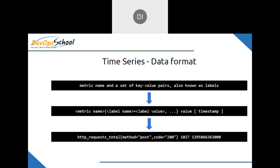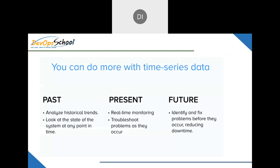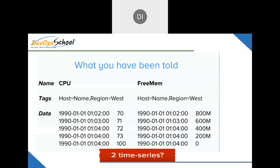With time series data you can capture past data, present data, and based on that history you can also identify and fix problems before they occur, reducing downtime. When we think of what time series data looks like, we think of data collected at certain timestamps — for example, values like 102, 103, 104 — tagged with hostname, region, and so on.